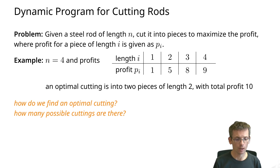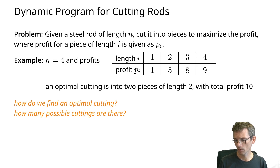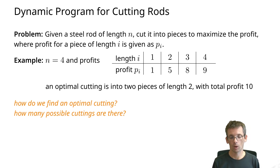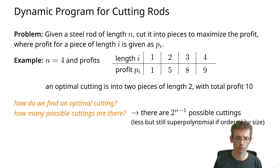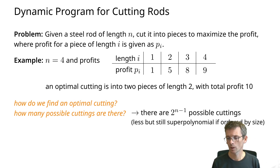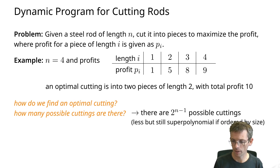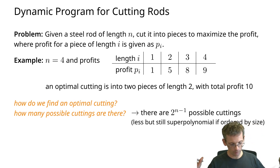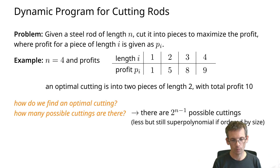Now the problem we want to consider is: how do we find an optimal cutting? First, the question of how many possible cuttings there are — because if there weren't that many, we could try all of them. But that is not a good option because that is essentially an exponential number. So we cannot simply try all cuttings. What we need to do instead is something clever, and what this will be based on is that for this problem we can reduce the big problem — an optimal solution of the big problem — to optimal solutions of smaller problems.